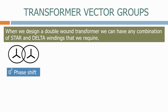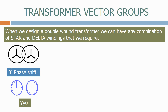If we want to represent the transformer as a symbol, we call it a YY0, where the capital Y represents a star primary winding, the lowercase y represents a star secondary winding, and the zero represents a zero-degrees phase shift.